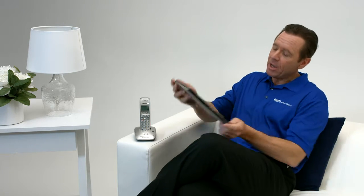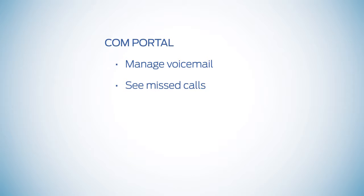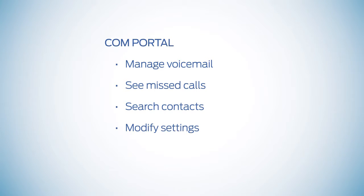Manage your FiPhone service from any internet-enabled device with EPB's CommPortal. Just visit phone.epbfi.com and enter your username and password. On CommPortal, you can manage your voicemail, see missed calls, search contacts, modify settings, and more. A handy help option is also located at the upper right-hand corner of your screen.